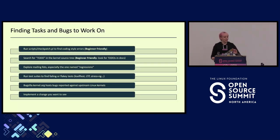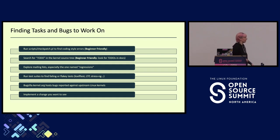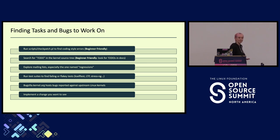For finding tasks and bugs to work on: keep in mind the potential false positives from the checkpatch script. Search for TODOs in the kernel source tree — I grep'd for TODO and I think there were over 5,000 results. A good portion were in documentation, which is a great spot for beginners to dive into. Documentation can be a lot less intimidating than getting into C code, especially if you're still learning C. Getting into documentation is a great way to start understanding how the kernel works while still contributing.